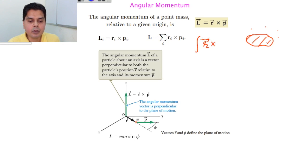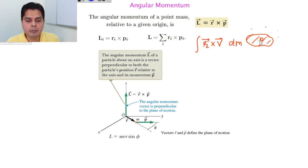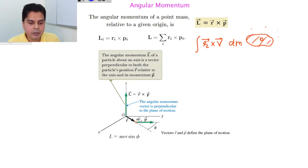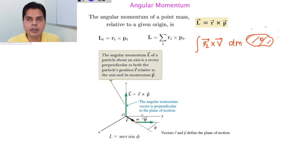For a continuous body, instead of summation we use an integral: L = ∫r × v dm, where dm is the mass of a small element and v is its velocity. Since angular momentum is a cross product, L is perpendicular to both r and p — it is perpendicular to the plane of motion. If r and p both lie in the xy-plane, then L is along the Z axis.